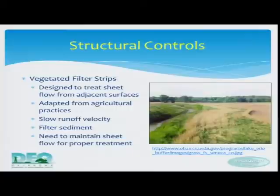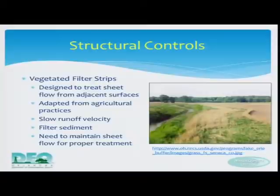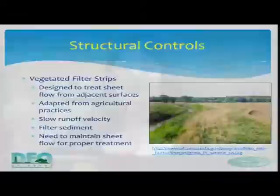Vegetated filter strips are a practice adapted from agriculture, designed to treat sheet flow from adjacent surfaces. They slow runoff velocity and filter sediment, but you need to maintain sheet flow across the vegetated filter — otherwise you'll get concentrated flow erosion through your vegetated strip.